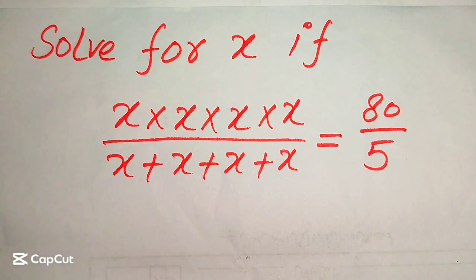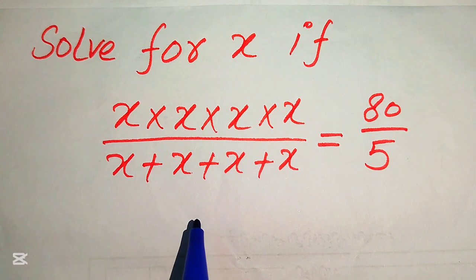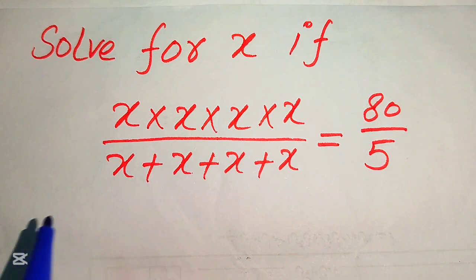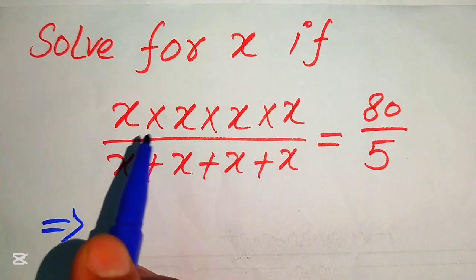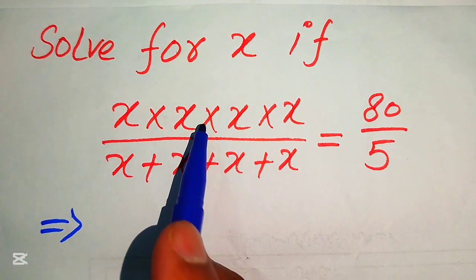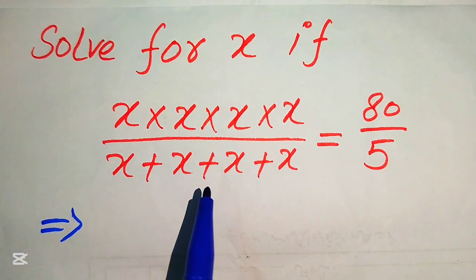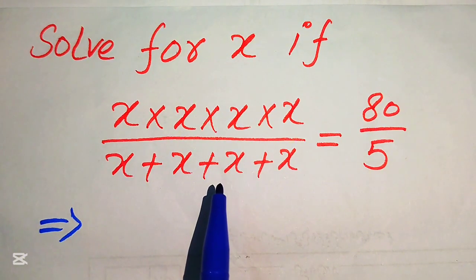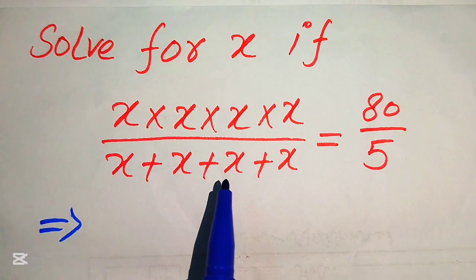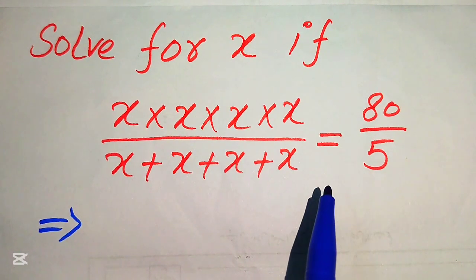Hello everyone. Today I want to show you how to solve this problem for the values of x. So if we have here, you see that x is multiplied by 4 times, and in the denominator we have x is added by 4 times, and it equals 80 over 5.